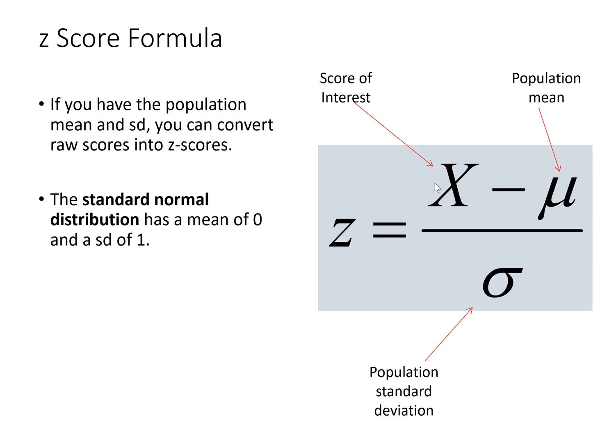Somewhat related to the normal distribution is the z-score. A z-score is simply how many standard deviations apart a given score is from its mean. A positive z-score means a score is greater than its mean; a negative z-score means a score is less than its mean. Combined with the assumption of a normal distribution, we can look up the proportion of the area under the curve in the standard normal distribution — a normal distribution with a mean of 0 and a standard deviation of 1.